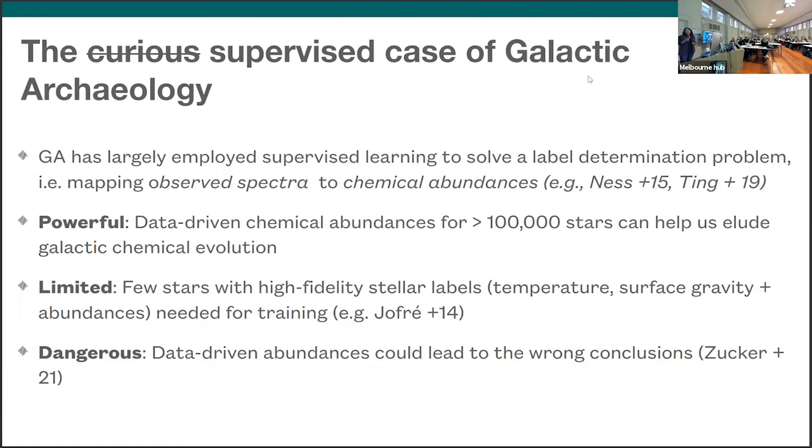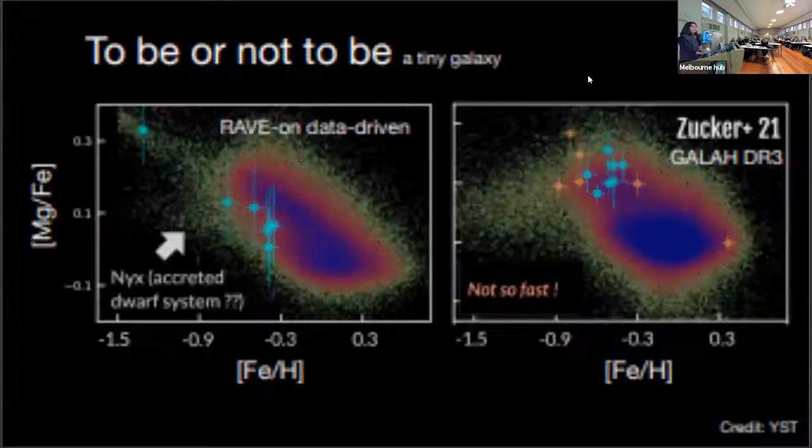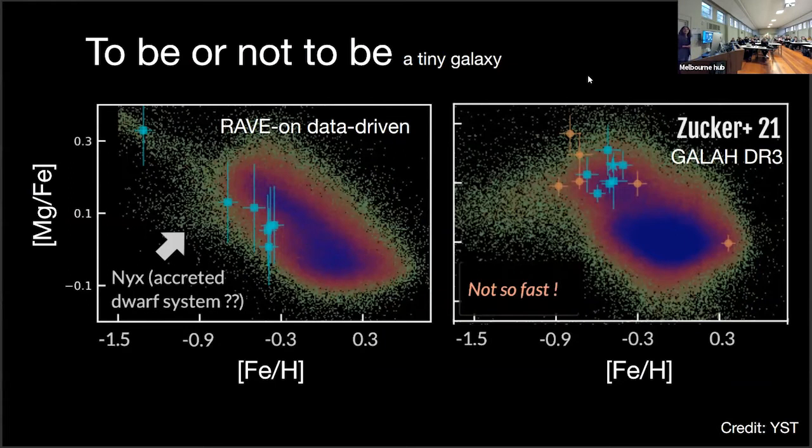However, this is limited because we have very few stars with high fidelity stellar labels, such as temperature, surface gravity, and metallicity that we need for training. The more and more features and information we want to predict, the more we need in our training set, which makes the problem even more challenging. This is also very dangerous because data-driven abundances could lead to the wrong conclusions.